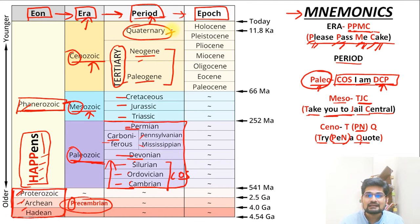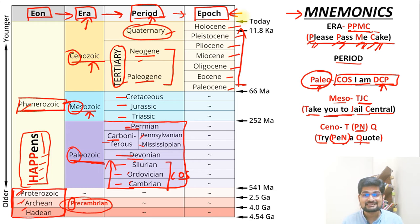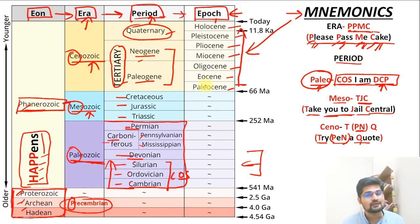The epochs within the Cenozoic era are Paleocene, Eocene, Oligocene, Miocene, Pliocene, Pleistocene and Holocene — abbreviated PEOMPP H. The mnemonic sentence is 'Put eggs on my plate please honey.' We will learn the detailed events associated with each epoch as we go further.